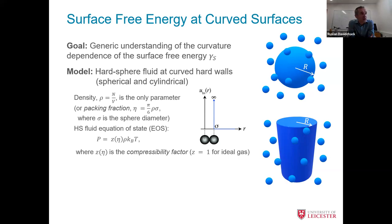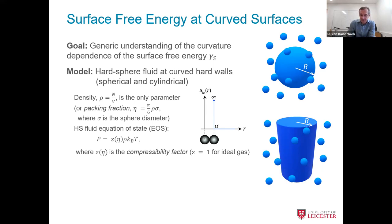So density rho times sigma cubed gives this quantity. For hard spheres, we also have an equation of state: P equals rho k_B T. Temperature enters simply as the energy scale, and because potential energy is either zero or infinite for hard sphere interactions, the temperature dependence is trivial — the only parameter is density. There is this compressibility factor, which would be one for ideal gas, and then deviates from one for hard spheres.